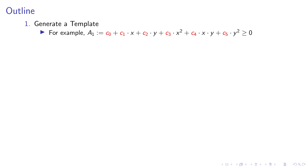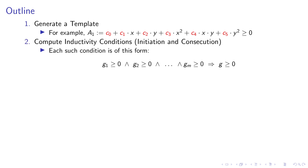Here's an outline of our approach. We start by generating a template automatically — we generate the most general possible template consisting of all possible terms. For example, looking for quadratic invariants over two program variables x and y, we generate a template of all quadratic terms. If we want more than one inequality at every program location, we generate several of these. The second step is to compute the inductivity conditions — initiation and consecution — for all transitions of the program, which need to be satisfied for an inductive invariant.